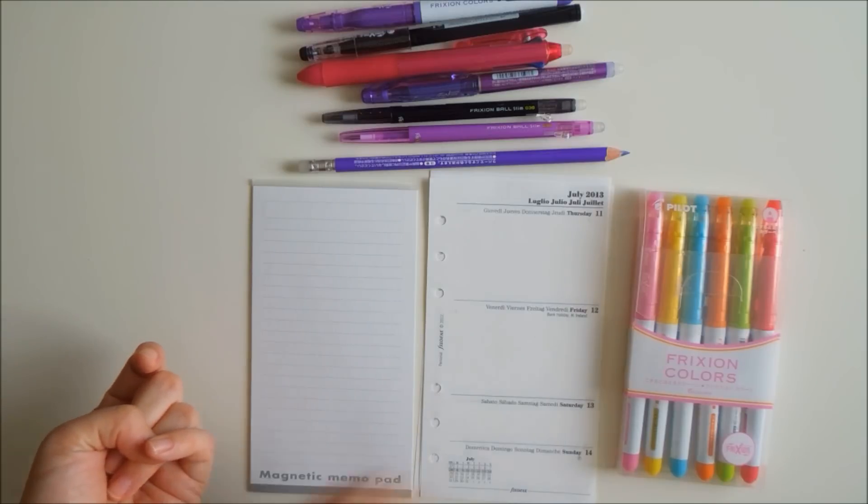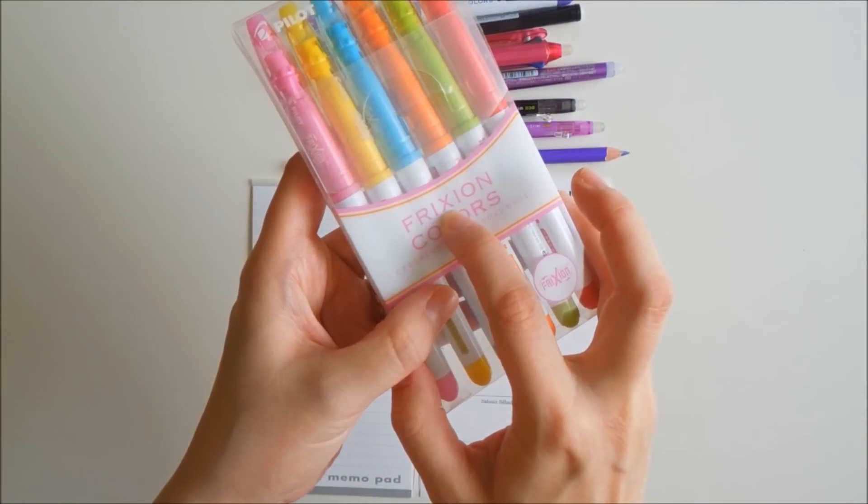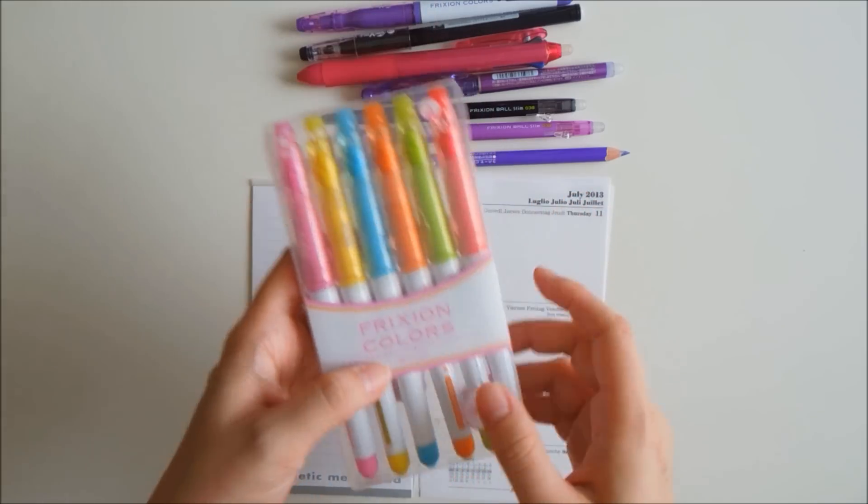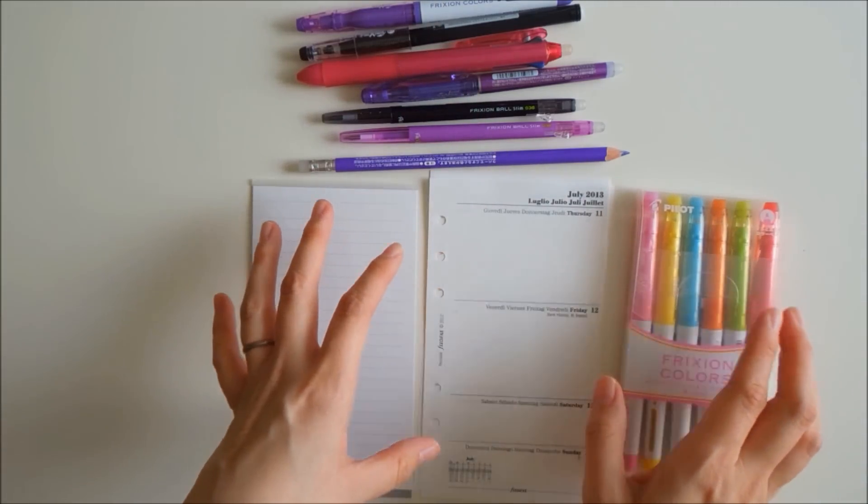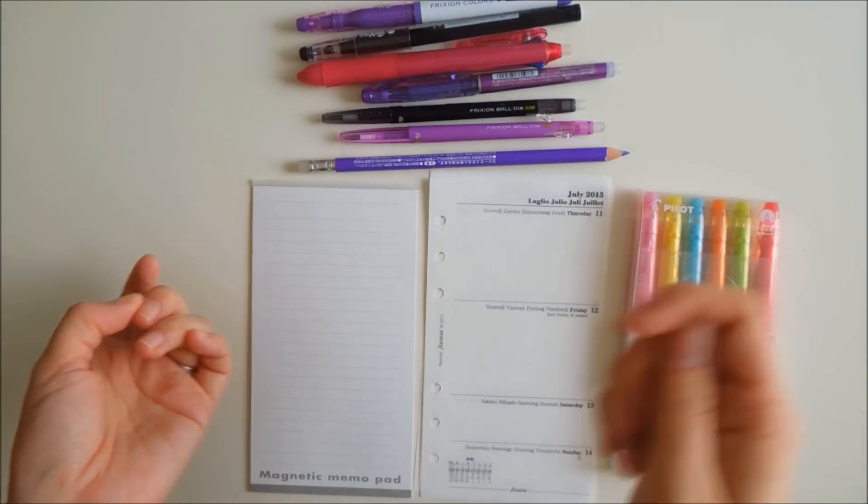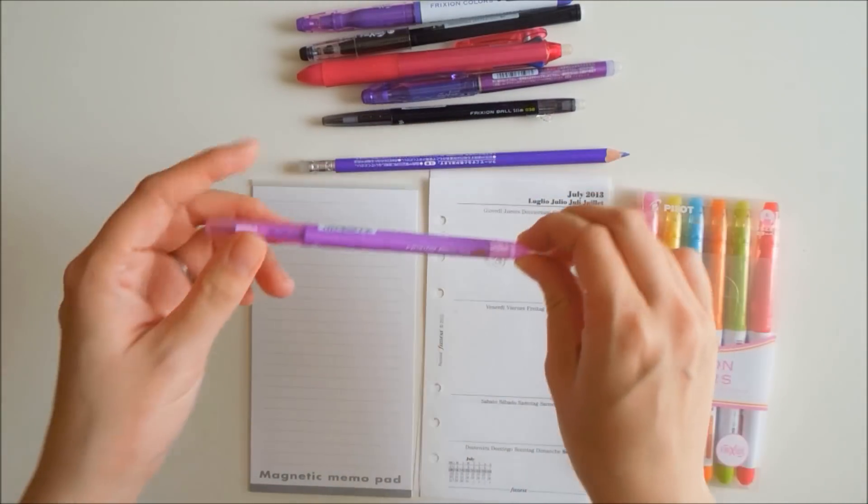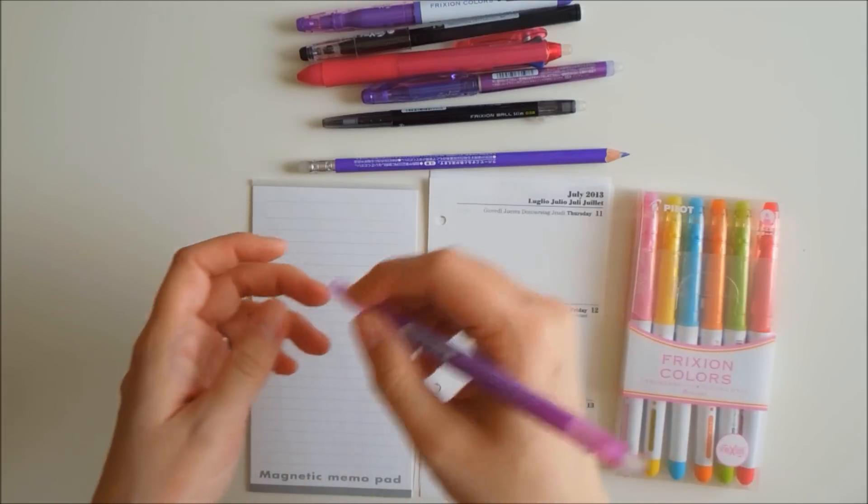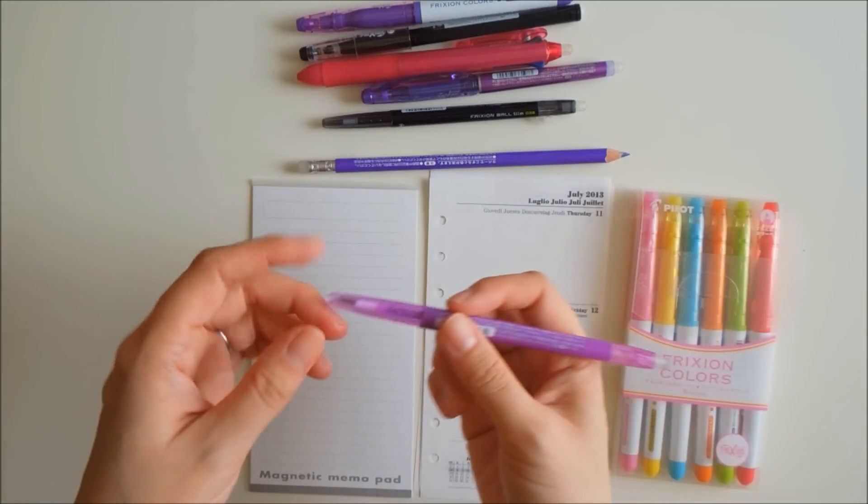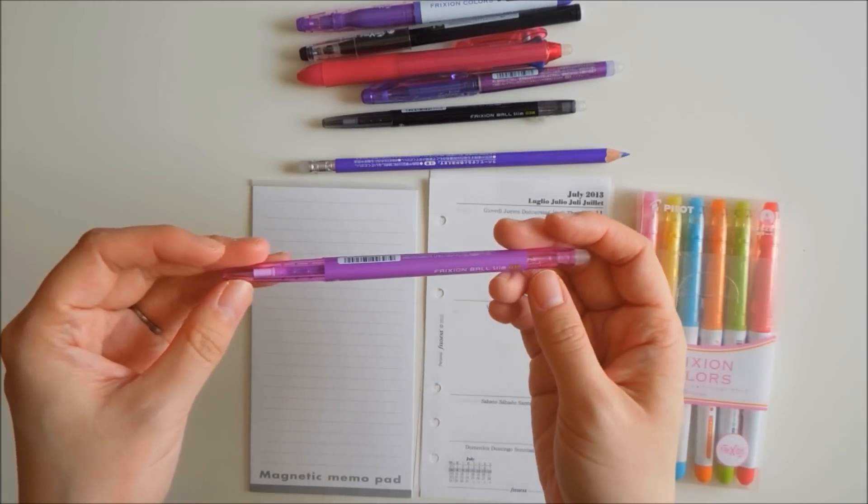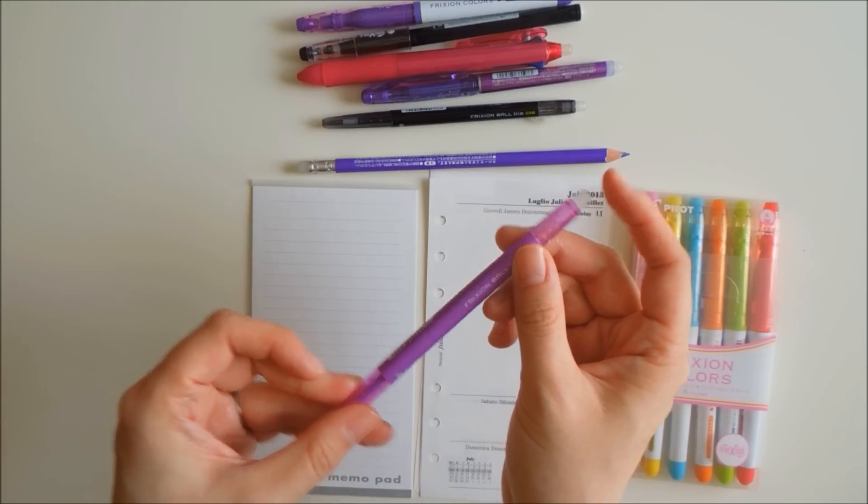For those of you who don't know, the brand is called Frixion, F-R-I-X-I-O-N, and this brand is known for the ability to erase. If you write something in pen and make a mistake, you have to use whiteout or cross it off, but with Frixion ink you can easily erase using the tip here.